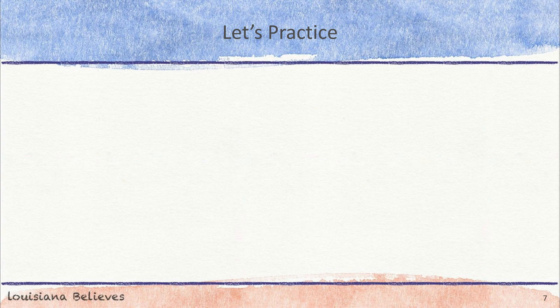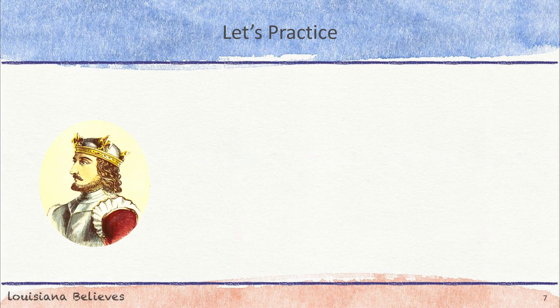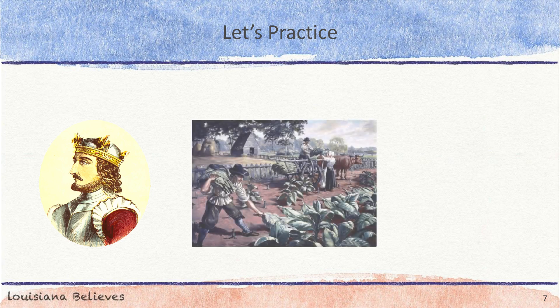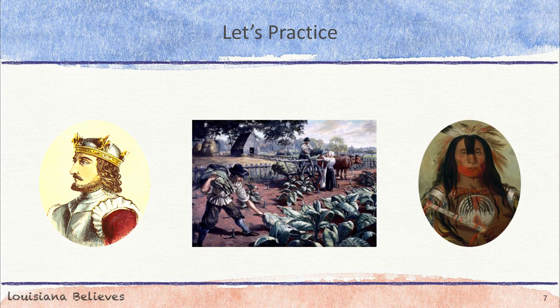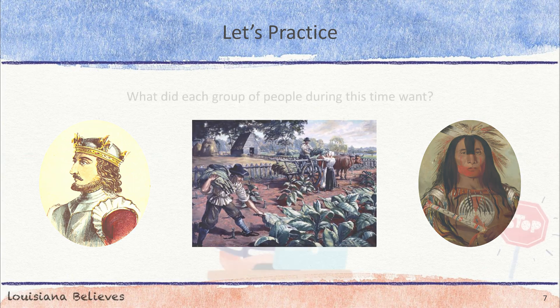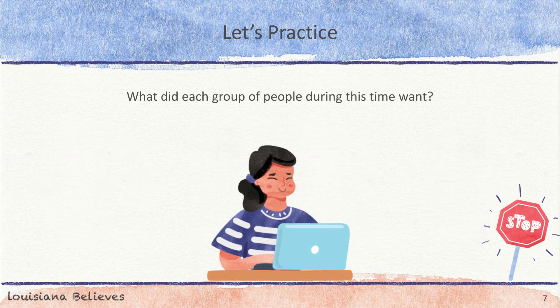Let's pause and think about the three big groups of people we've talked about so far. First, there were the powerful rulers of Britain, Spain, and France. Then, there were the colonists who came from Europe to North America. Finally, there were the Native Americans who were already living in North America when the colonists arrived. What did each of these groups want during this time? Pause the video and answer the question on your handout at the first stop sign. Then click play when you are ready to continue.